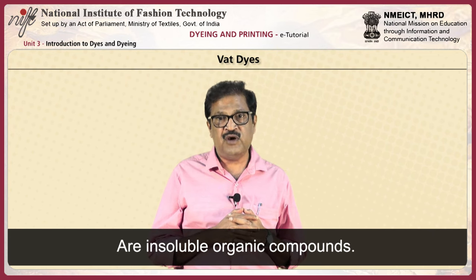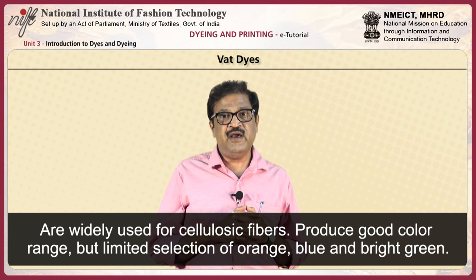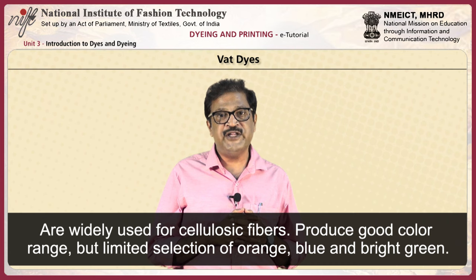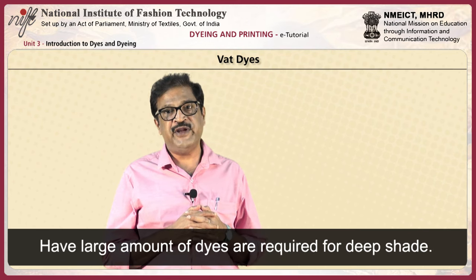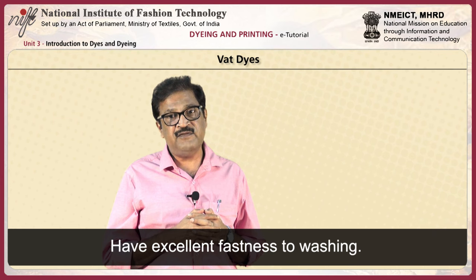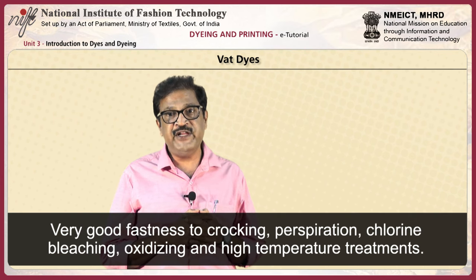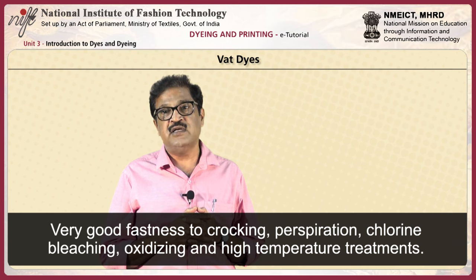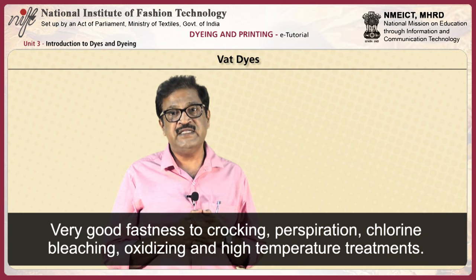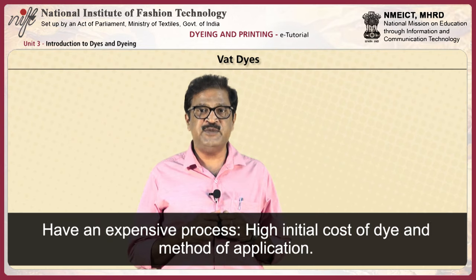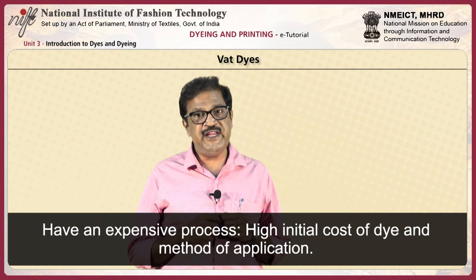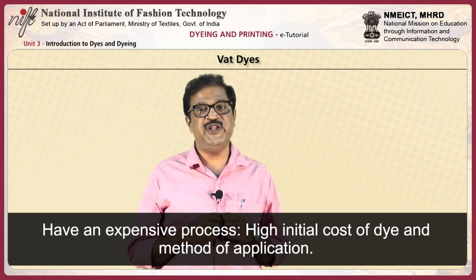Vat dyes: vat dyes are insoluble organic compounds widely used for cellulosic fibers. They produce a good color range but with limited selection of orange, blue, and bright green. Large amounts of dye are required for deep shade. They have excellent fastness to washing and very good fastness to crocking, perspiration, chlorine bleaching, oxidizing, and high temperature treatments. Vat dyeing is an expensive process because of the high initial cost of the dye and method of application.